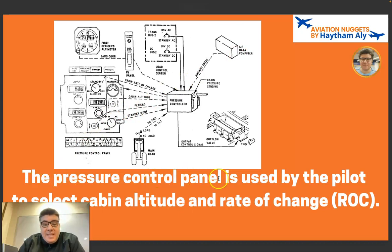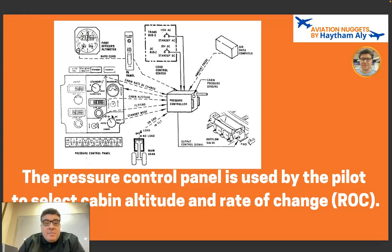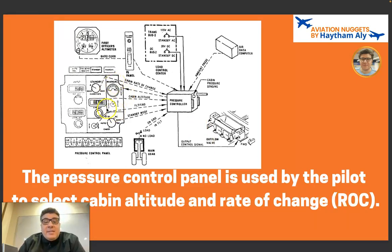The pressure control panel is used by the pilot to select cabin altitude and rate of change. In most modern airliners, the cabin altitude target in auto mode is 8,000 feet during flight — the aircraft may be at any cruise altitude, but the cabin altitude is maintained at approximately 8,000 feet. The pilot needs to monitor cabin altitude and the cabin rate of change during climb and descent.